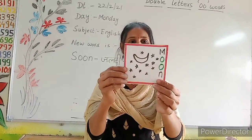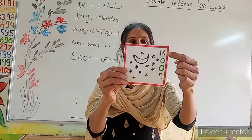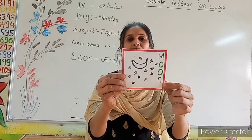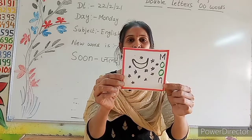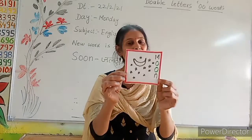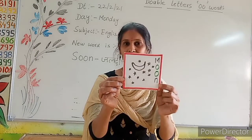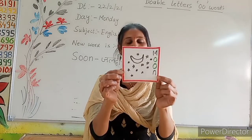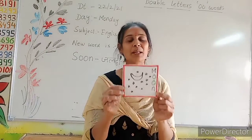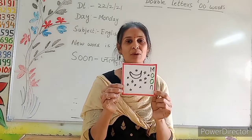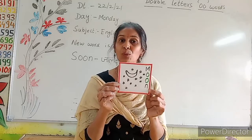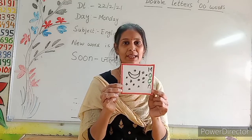Abh ye kya hai? Moon. Hei na? M-O-O-N. Moon. Abhi humne ye pictures dekhe aur kuch spellings bhi dekhe hain na? Double O ka sound jo hai, uska oo ka sound aata hai.